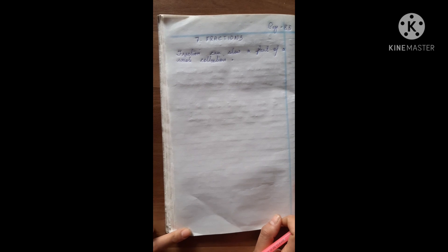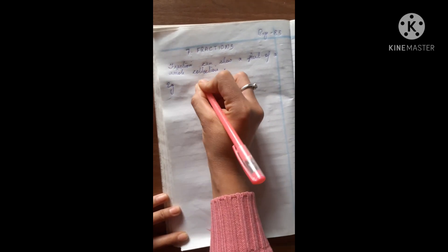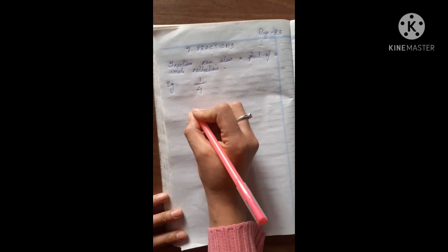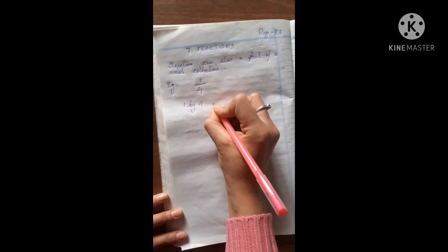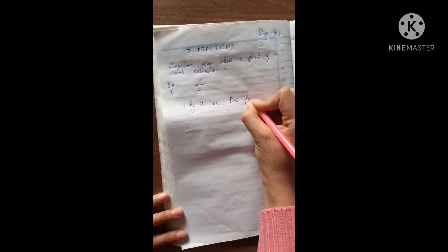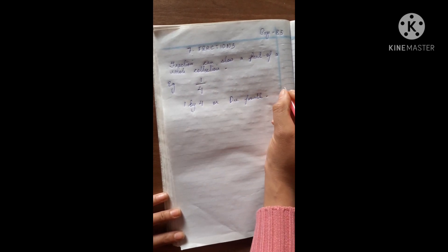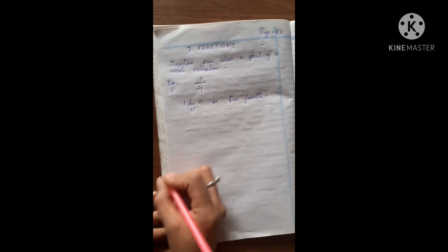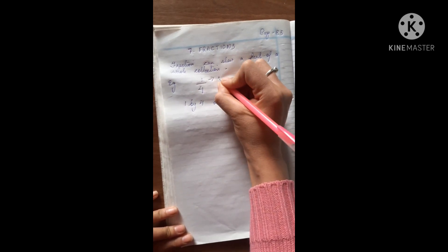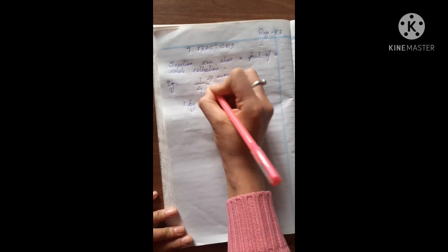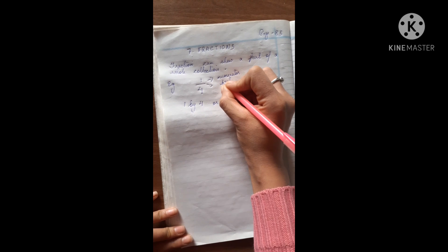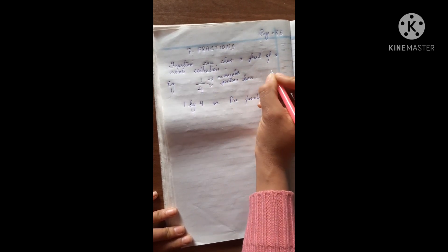Fraction can show a part of a whole collection. We can read this as 1 by 4, or one-fourth. This is the numerator and this is the fraction bar.